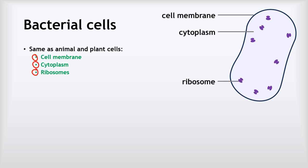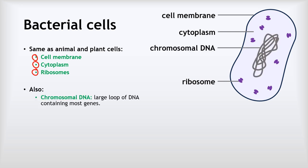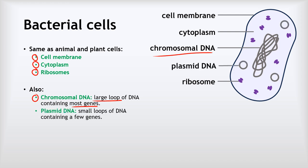However, in addition to that, they've got a couple of other things. They've got what we call chromosomal DNA. Now this is DNA that is floating freely in the cytoplasm rather than being held within a nucleus. This chromosomal DNA is a large loop of DNA that contains most of the bacteria's genes.